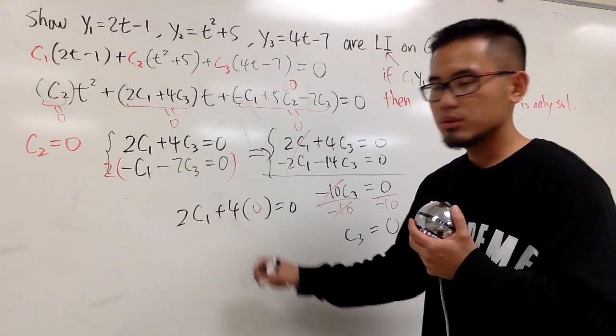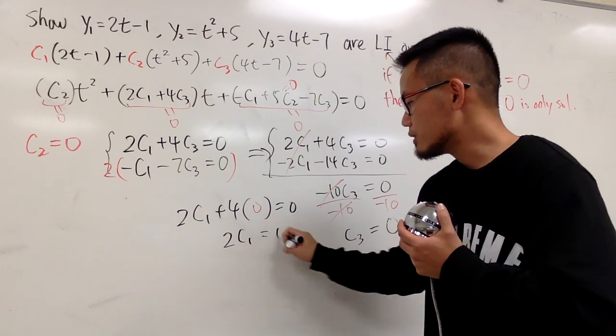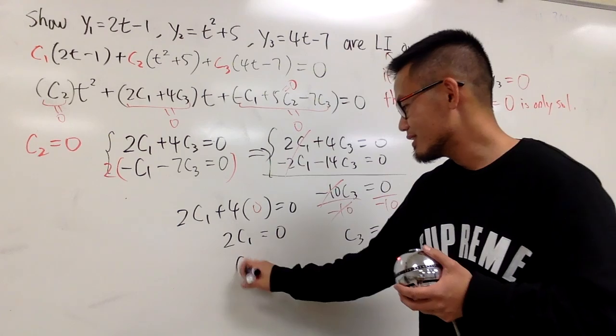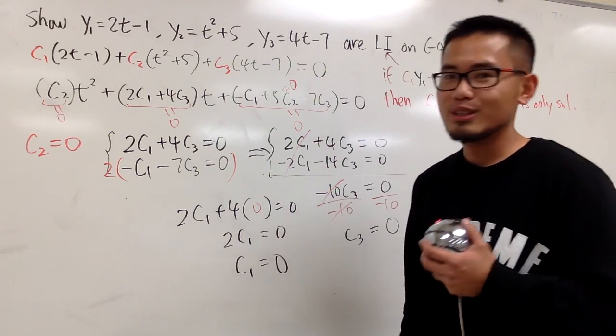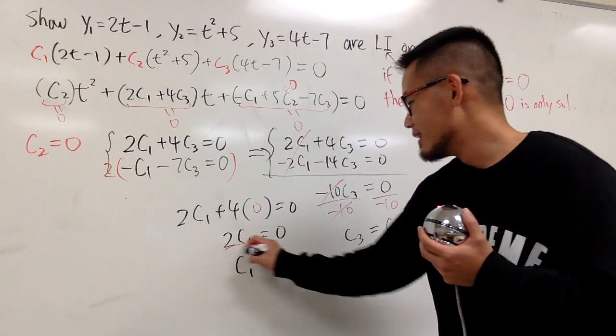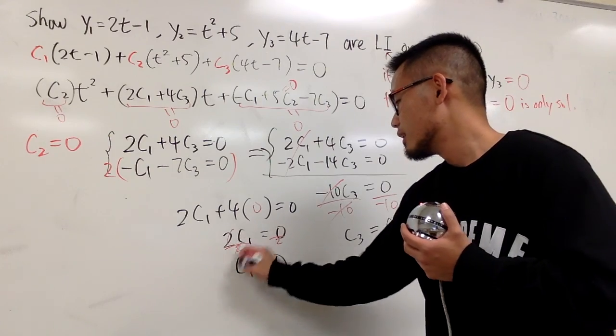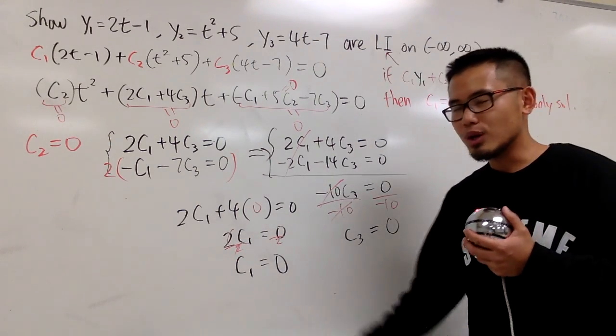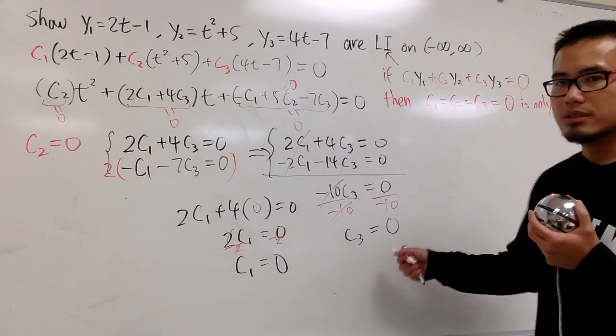2c1 plus 4c3, which is 0, is equal to 0. This is 0, so you are saying 2c1 is equal to 0. c1 is, of course, 0. Right? So you see, c1 is 0, c2 is 0, c3 is 0.